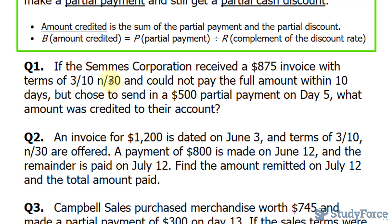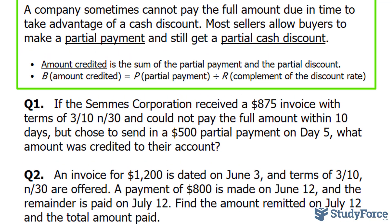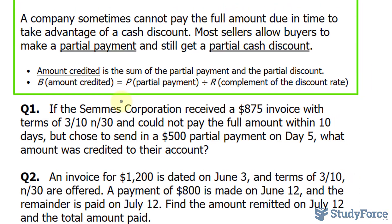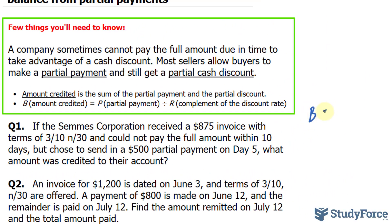They are trying to pay $500 out of the $875, and we are looking for the amount credited. We'll use the formula where the amount credited (B) is equal to the partial payment of $500 divided by R, which is the complement of the discount rate. To find the complement of the discount, you take 100% and subtract the discount percent.